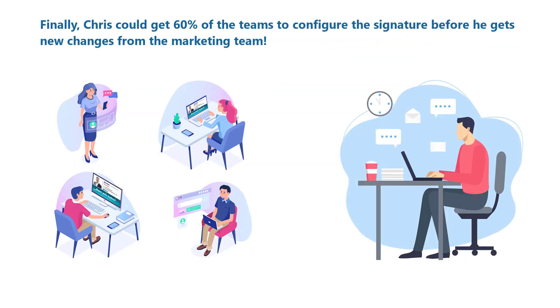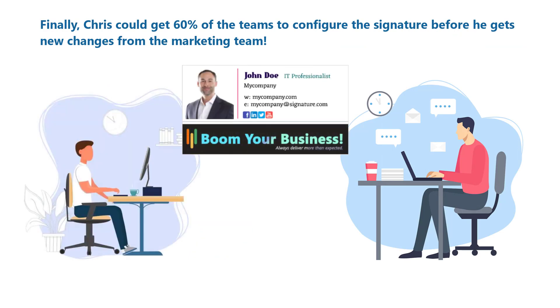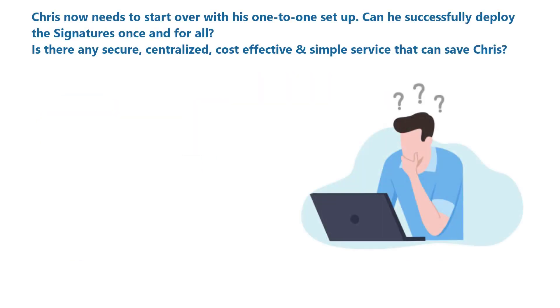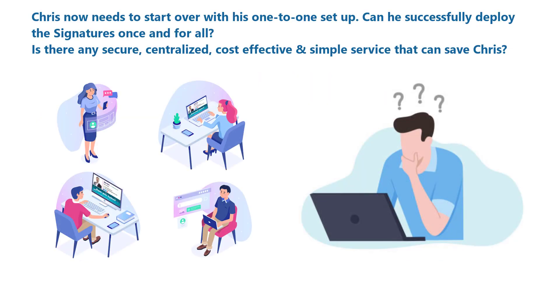Finally, Chris could get 60% of the teams to configure the signature before he gets new changes from the marketing team. Chris now needs to start over with his one-to-one setup. Can he successfully deploy the signatures once and for all?